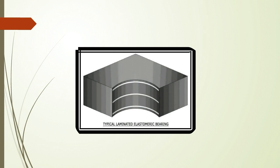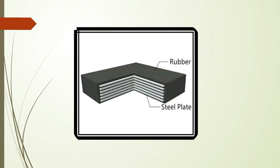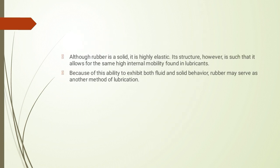इस diagram में आप देख सकते हैं कि typical laminated elastomeric bearing कैसा दिखता है। इसमें rubber indicate किया है और center में steel plates लगाए हुए हैं — rubber, then steel, again rubber, then steel — a kind of laminated or sandwich type construction prefer किया गया है। Although rubber is a solid, it is highly elastic; its structure allows for the same high internal mobility found in lubricants.